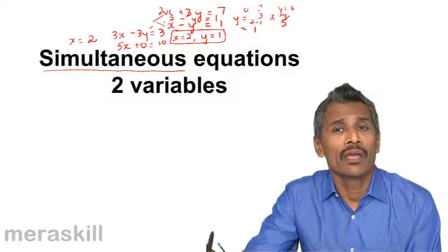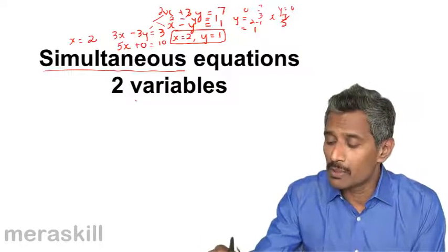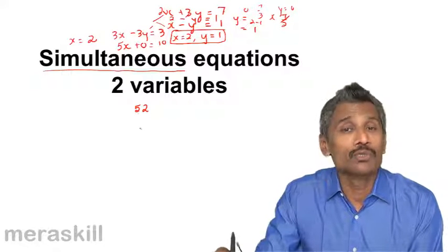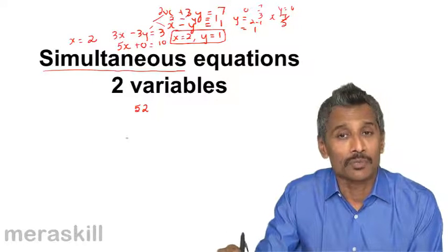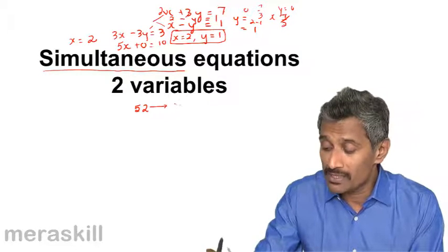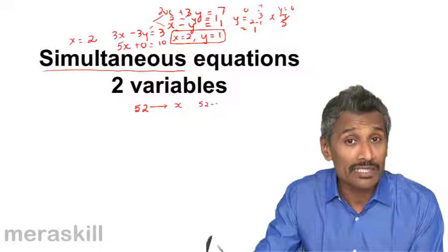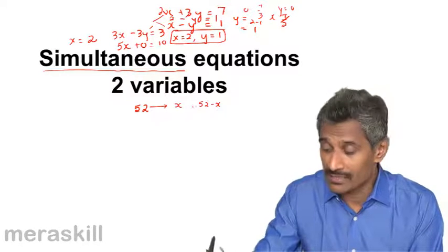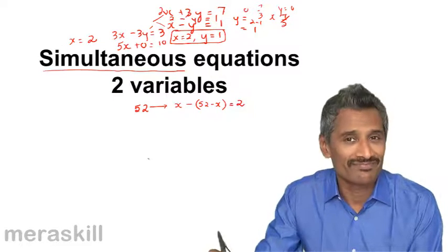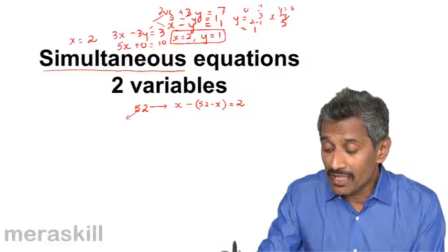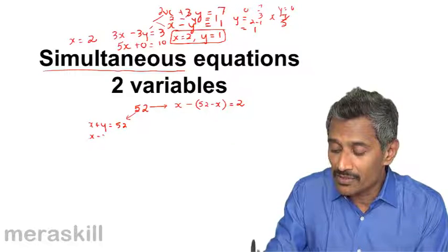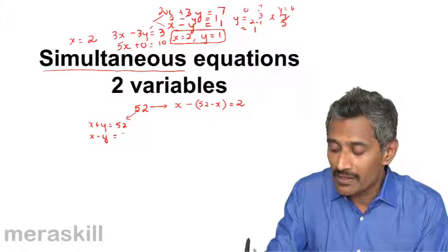For example suppose you say sum of two numbers is 52 and the difference of the same two numbers is 2. Now we can, if you use one variable, we can take one number as x and the other one is 52 minus x because their sum is 52 and their difference is 2. So you form an equation this way. The same thing we can even write this way, the same thing we can even write this way: sum of the numbers is 52 and the difference of the same numbers is 2.